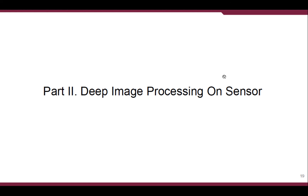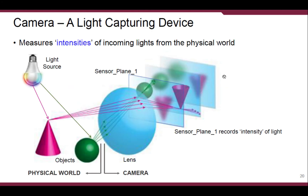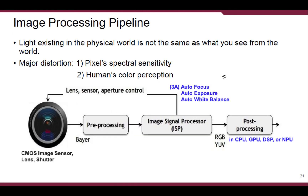The second part is image processing on-sensor. A camera is a light-capturing device — it measures the intensities of incoming light at each pixel on the sensor plane. But light existing in the physical world is not the same as what you see in a photo. There are two major distortion sources: first, pixel intensity varies according to the light spectrum, and second, human color perception is nonlinear. We have to compensate for those two distortions through image processing.